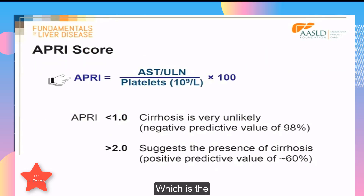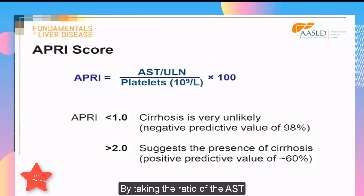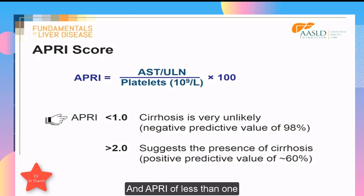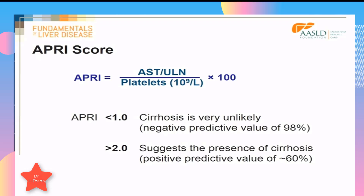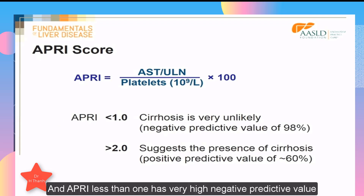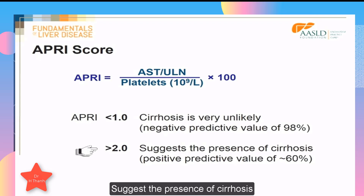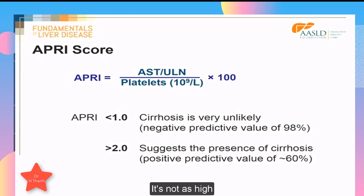The APRI, the AST-to-Platelet Ratio Index, is calculated by taking the ratio of the AST to the upper limit of normal AST, dividing by the platelet count, and multiplying by 100. An APRI of less than 1 makes cirrhosis very unlikely and has a very high negative predictive value. An APRI score greater than 2 suggests the presence of cirrhosis, though the positive predictive value is not as high.